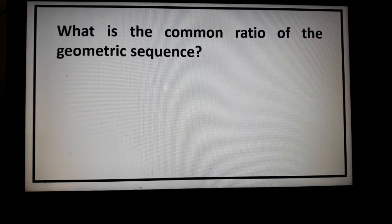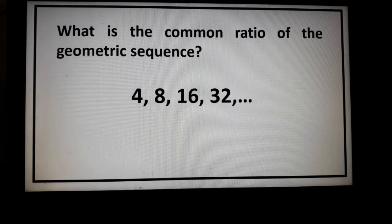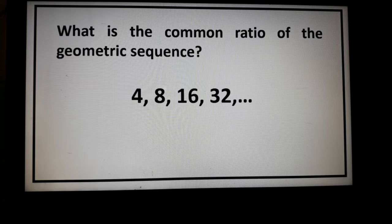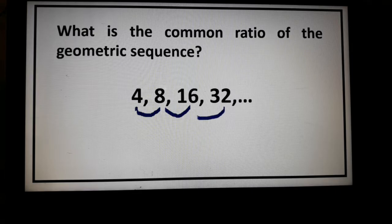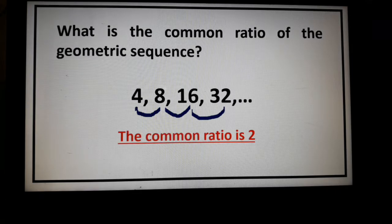Let's have this example. What is the common ratio of the geometric sequence 4, 8, 16, 32? Notice that there are more than two consecutive terms in this example, so we can just derive the common ratio by dividing two consecutive terms. 8 divided by 4 is 2. 16 divided by 8 is positive 2. 32 divided by 16 is positive 2. So the common ratio here is positive 2.